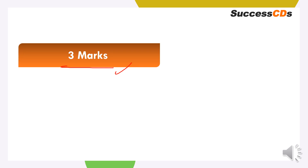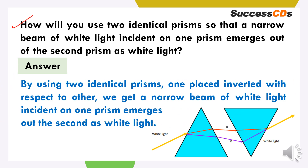We have three marks questions now. How will you use two identical prisms so that a narrow beam of white light incident on one prism emerges out of the second prism as white light? Ham do identical prism lete hai — ek ko seedha rakhte hai, dusare ko inverted rakhte hai. Jo white light first prism se pass karti hai, wo scattering karti hai, aur vaapis re-combination hoke, white light vaapis se humme mil jati hai.